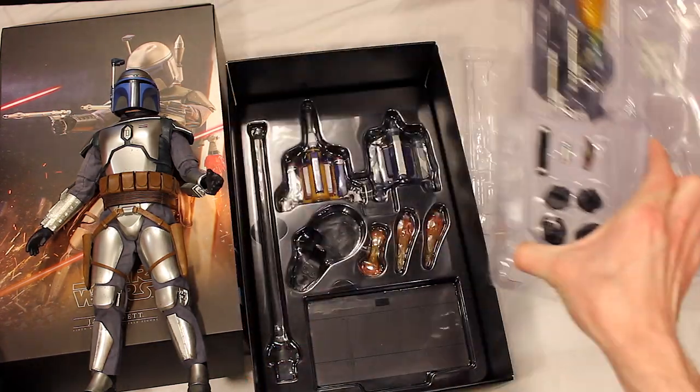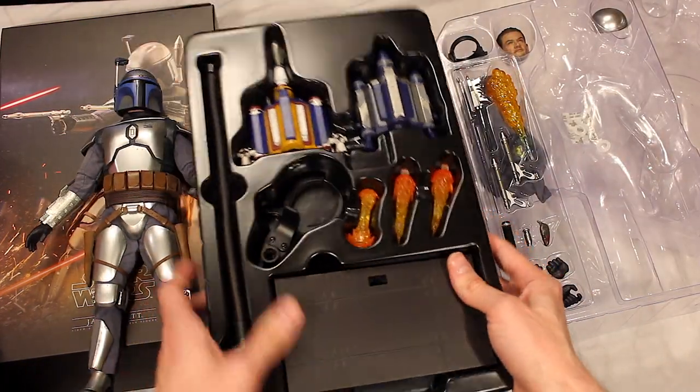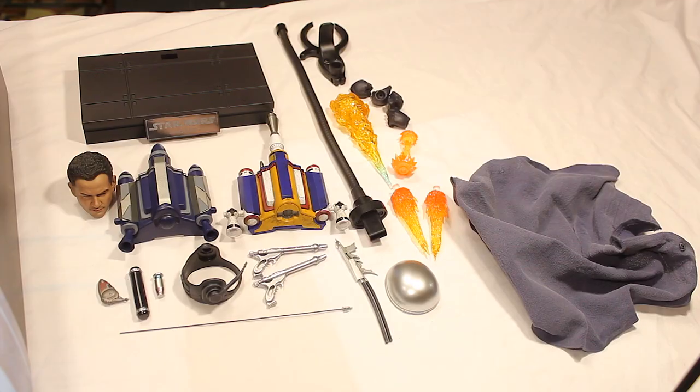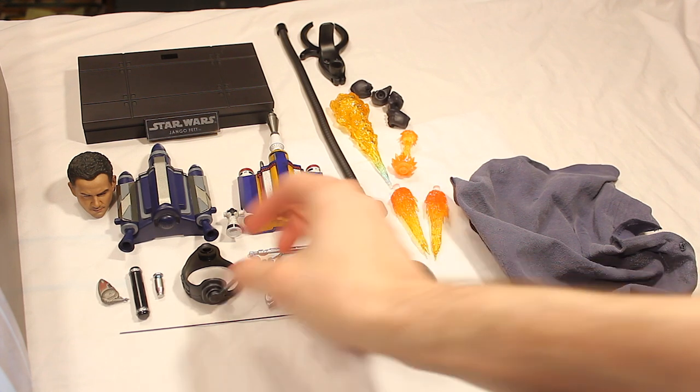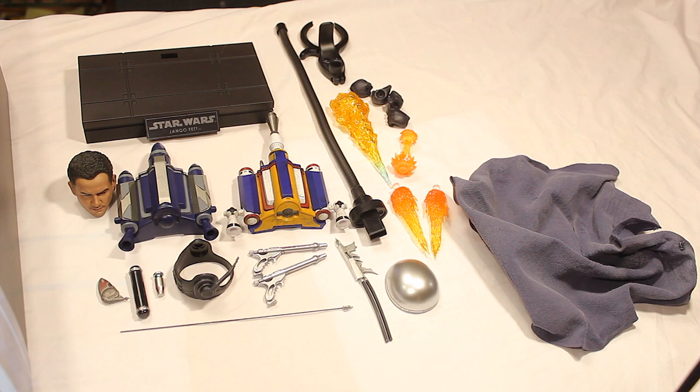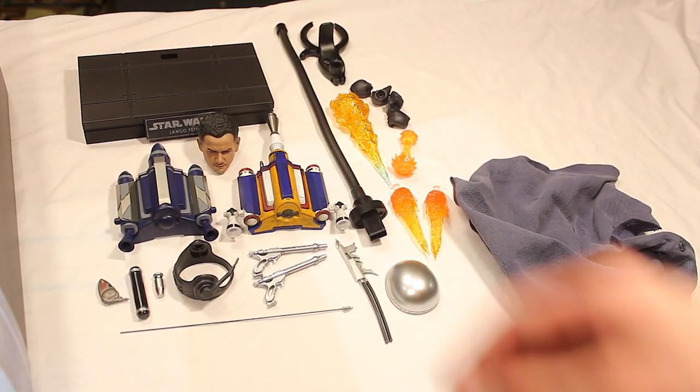And then you got more accessories in the bottom, of course. They just really seem to always go above and beyond, like two versions of the jetpack, for example, and all the effects. So let's get everything out. All right, so these are all the accessories that Jango Fett comes with. Which one should we start with? I think a lot of people probably want me to start with the head sculpt first, but I'm going to save that one for the last to build up to it. So why don't we start with the pistols?